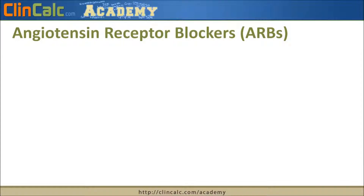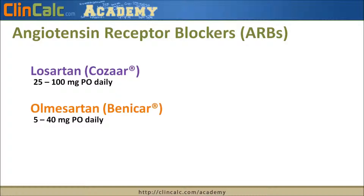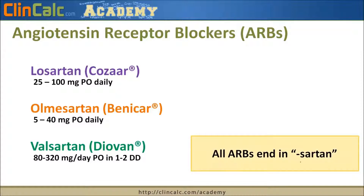The other drug class discussed here are the angiotensin receptor blockers, or ARBs. There are three common ones in the top 250 drugs. The first is Losartan, brand name Cozaar. The second is Olmesartan, brand name Benicar. And finally, Valsartan, brand name Diovan — both the generic and brand have a 'V' in them. They're all dosed very differently, and they all end in the suffix '-sartan,' so if you see '-sartan,' it's likely an ARB.